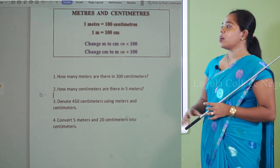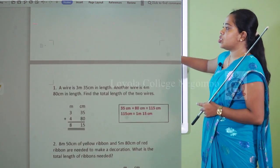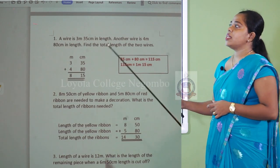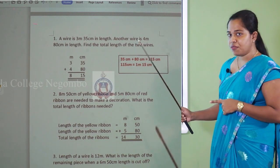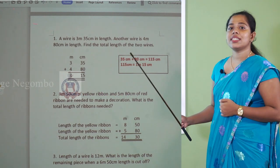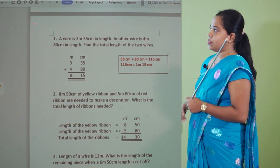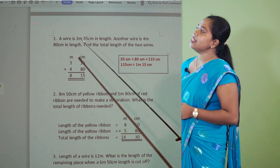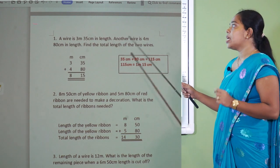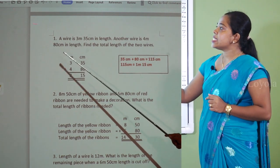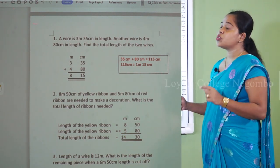So I hope you all understood how to answer these questions. Now we will move into addition of meters and centimeters. You all have learned this in grade 4 also, but we are learning it in grade 5 as well. First question: A wire is 3 meters and 35 centimeters in length. Another wire is 4 meters and 80 centimeters in length. Find the total length of the two wires.